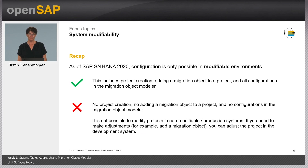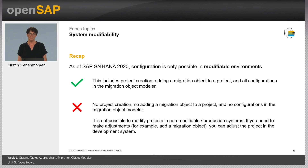A short recap for those who used an older version of the SAP S4HANA Migration Cockpit: as of SAP S4HANA 2020, configuration is only possible in modifiable environments. This includes project creation, adding migration objects to a project, and all configurations in the Migration Object Modeler. You are not allowed to create projects, add migration objects, or make configurations in non-modifiable productive systems. If you need to make adjustments in your productive system, you can adjust the project in the development system and then transport it to the respective system.